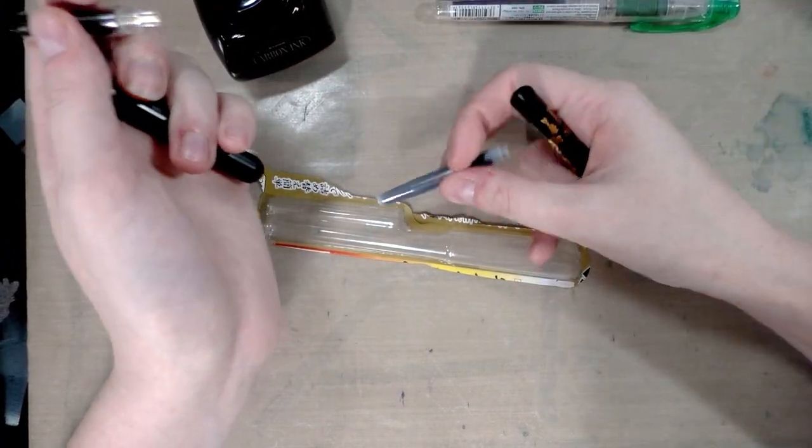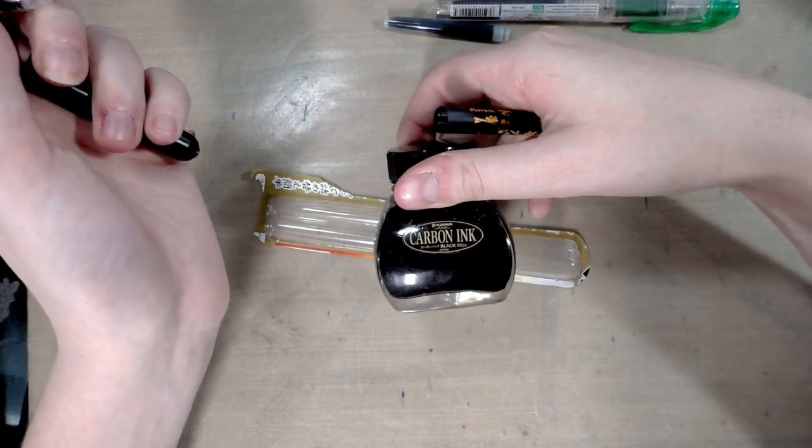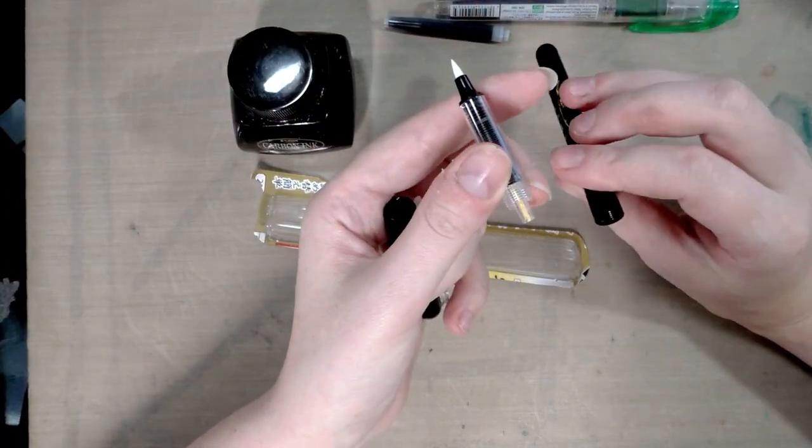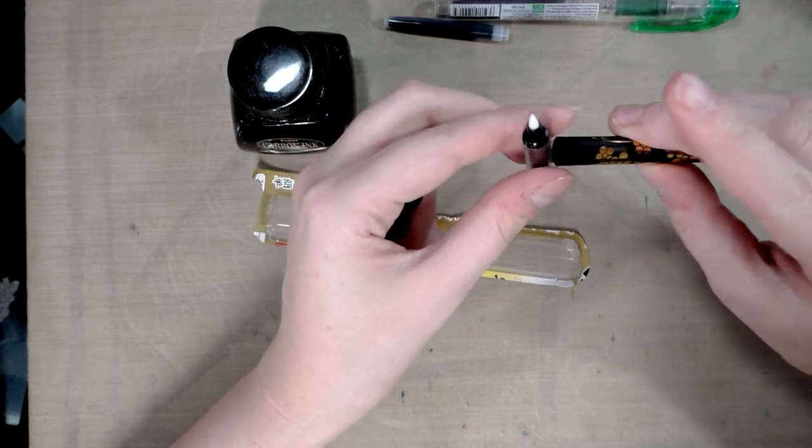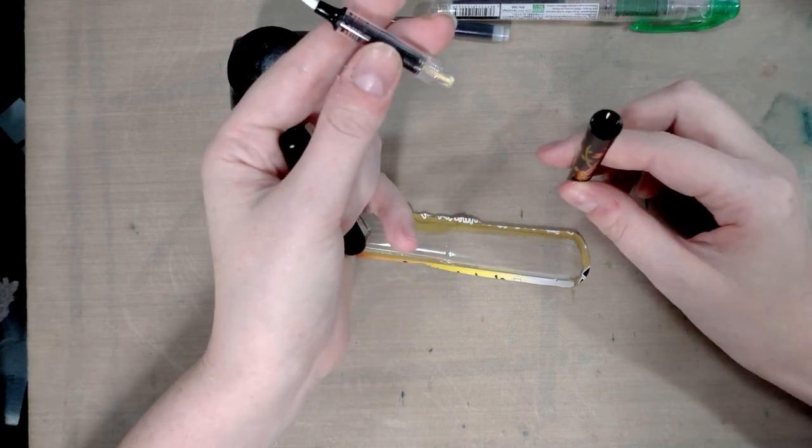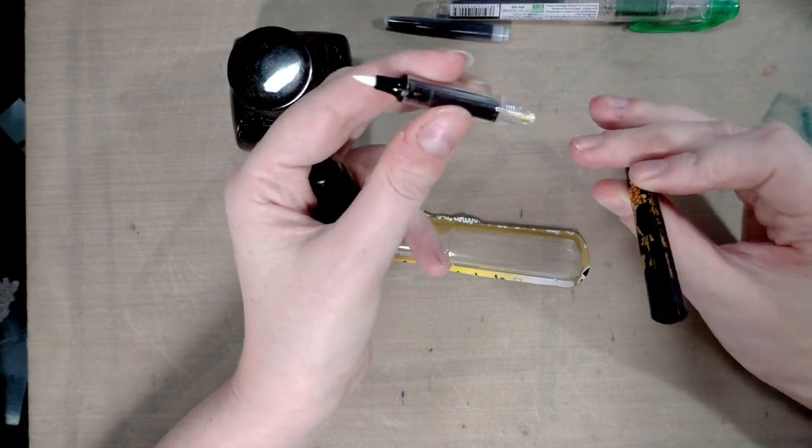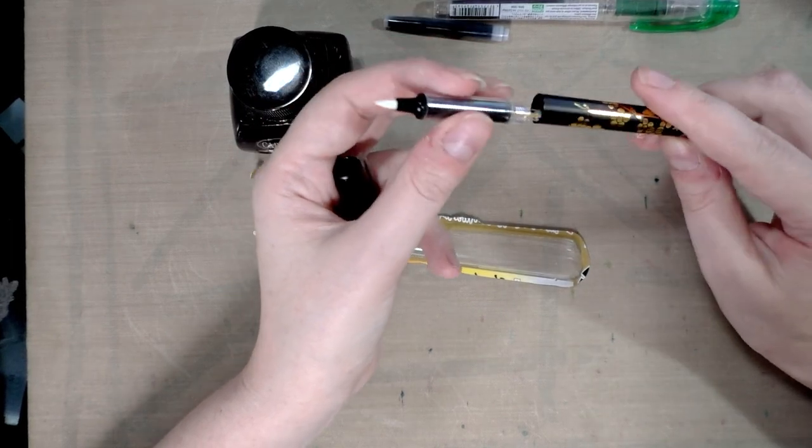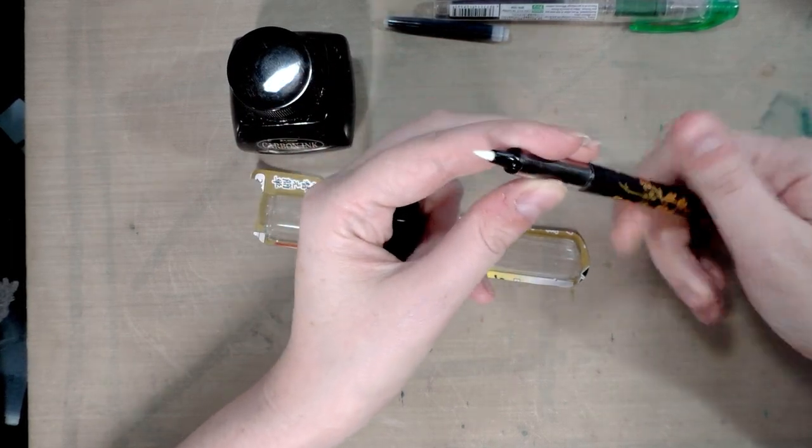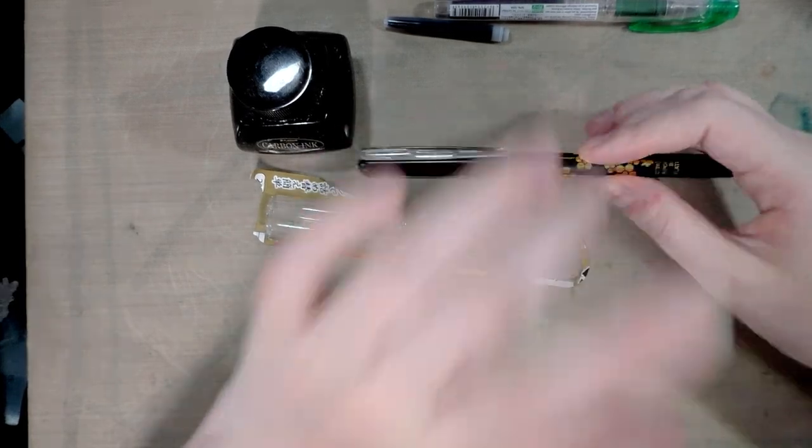But you know, I don't like using these little cartridges when I've got a big old bottle of this laying around. So what I'm going to do since this is a plastic body is I'm going to convert this to an eyedropper conversion. So I'm going to grab some silicone grease and a Q-tip and I'll be back in a minute.